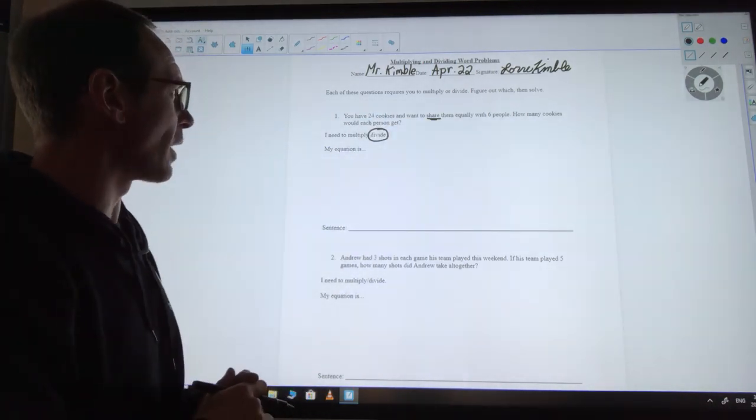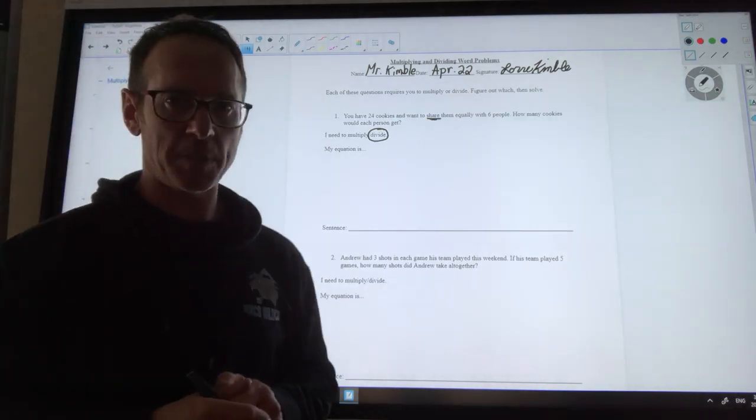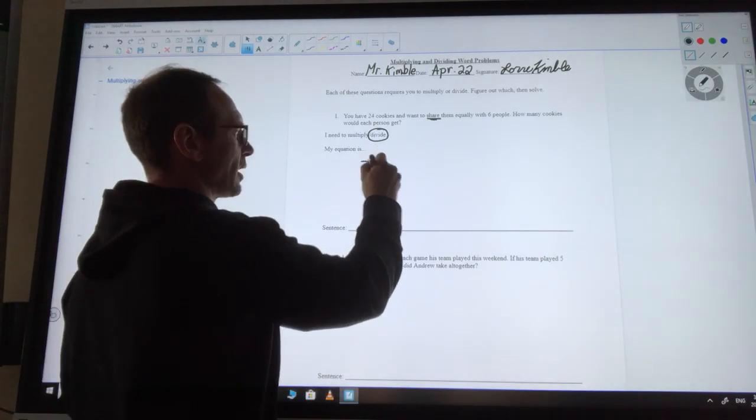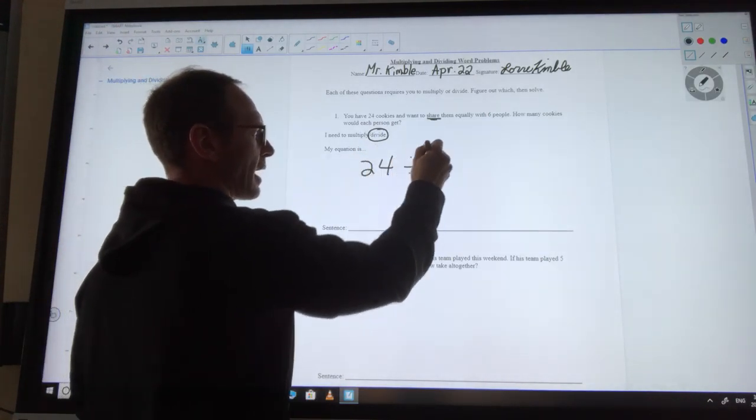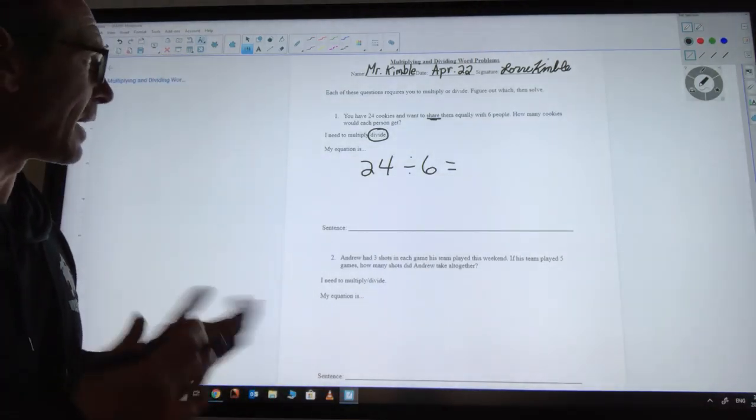Now the next step is to figure out what your equation is. I have 24 cookies and I want to share them equally with six people. My equation is 24 divided by 6 equals...